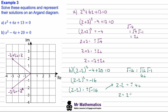Adding 2 to both sides, z equals 2 plus or minus 4i. On our Argand diagram, we have 2 on the real axis and 4 on the imaginary axis. Again, z and its complex conjugate z1 star are reflected in the real axis.